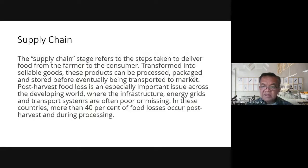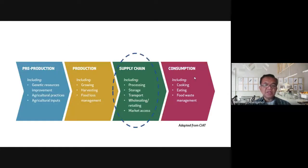Where the infrastructure, energy grids, and transportation systems are often poor or missing. In these countries, more than 40 percent of food losses occur post-harvest and during processing. Along these steps there are losses, products are damaged or become poor quality and can't be processed. Forty percent is a large amount lost.